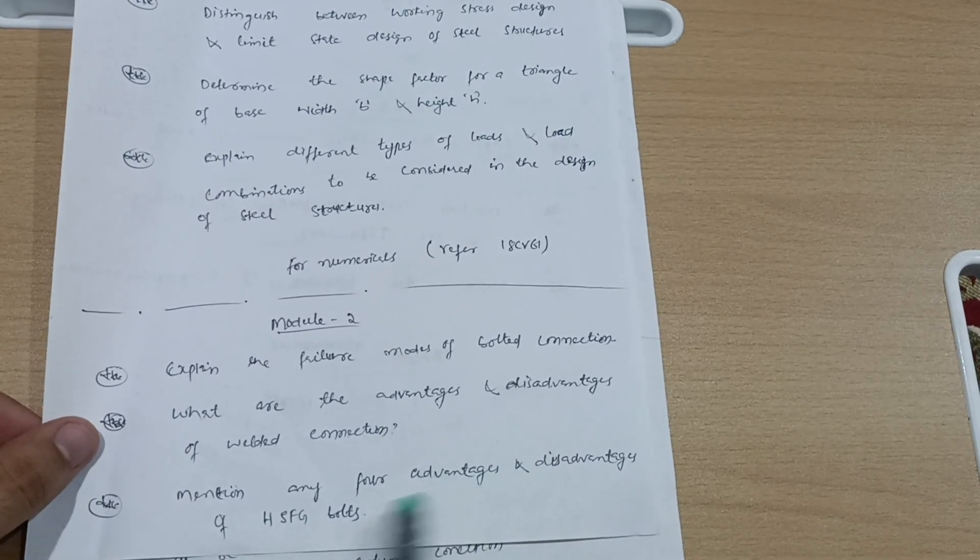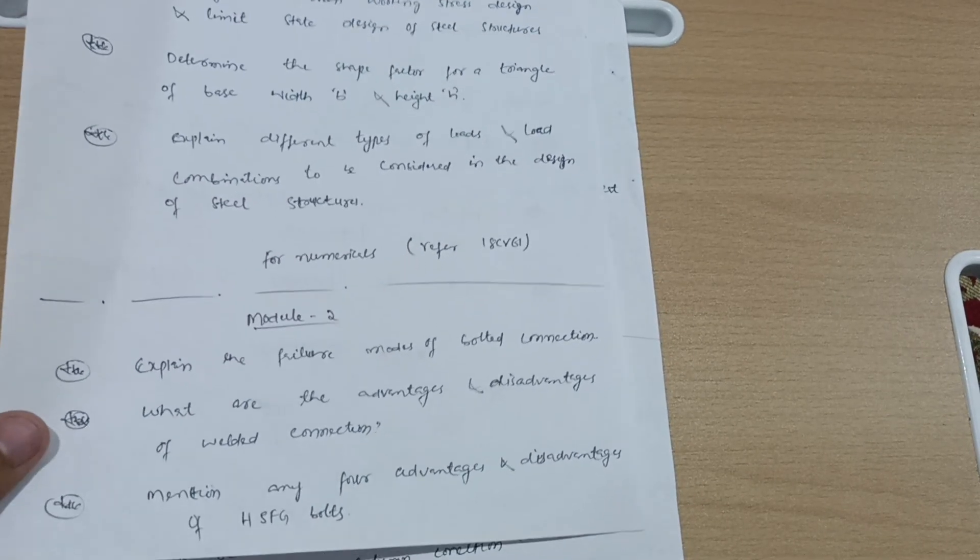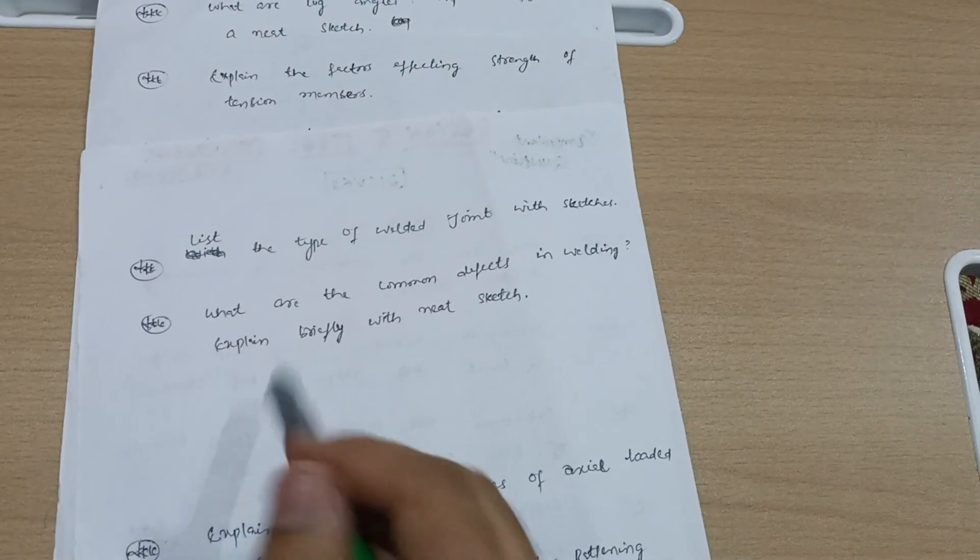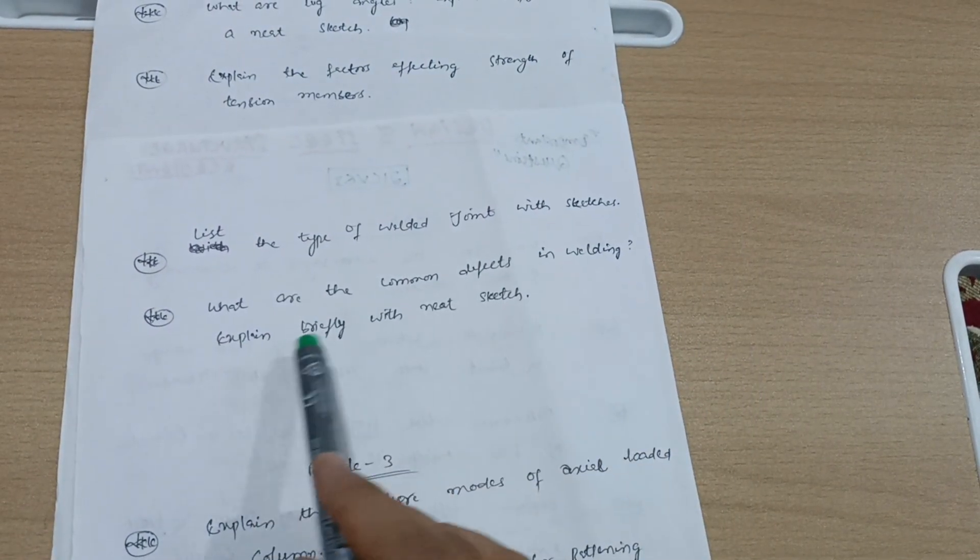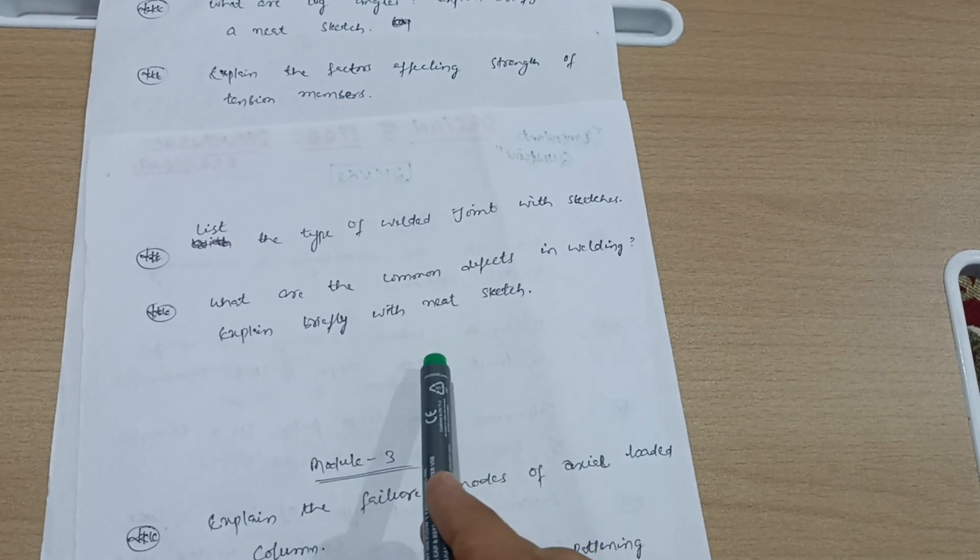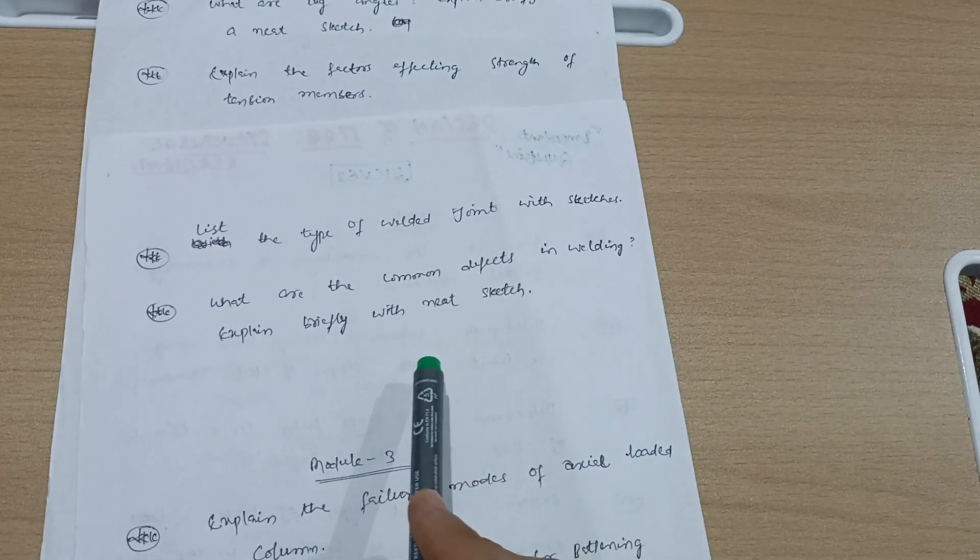Next is: List the type of welded joint with sketches. What are the common defects in welding? Explain briefly with neat sketch.